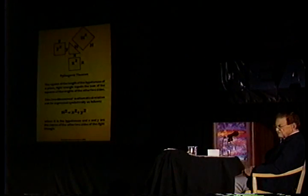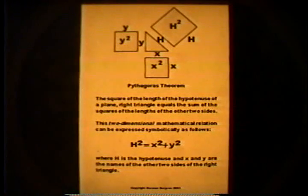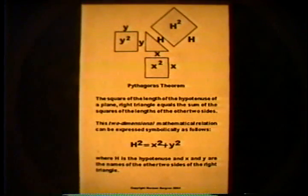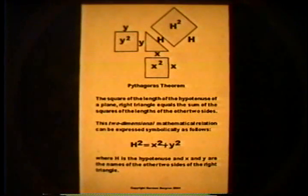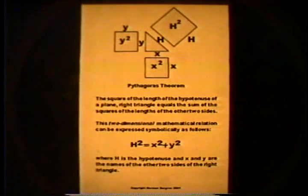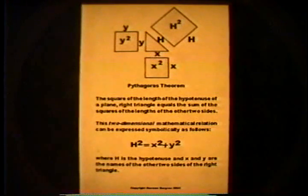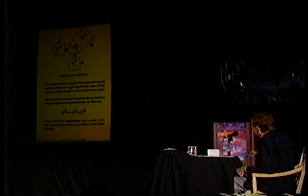I want to give you a little flavor of physicist thinking. I got intrigued with Kaku's presentation. It turns out that the starting point for Einstein's work was really the Pythagorean theorem. If you have a right triangle, you take one side and make a square out of it — the area of that square based on that one side, plus the area based on the other side, equals the area of the hypotenuse, the long side of the triangle. So these two areas equal the area of the hypotenuse.